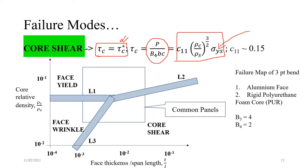A failure map is shown, which you should reproduce as a homework exercise to understand the full picture. Using this failure map, we can decide the design of the panel — whether the panel will yield, wrinkle at the face, or experience core shear. There are three lines: L1, L2, and L3. Above L1 is face yielding, below L1 is face wrinkling. Above L3 is face wrinkling, below L3 is core shear. Above L2 is face yield, below L2 is core shear.